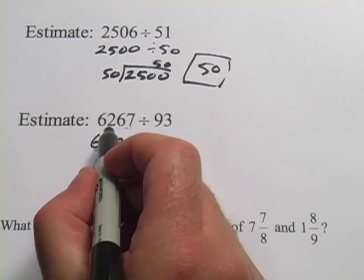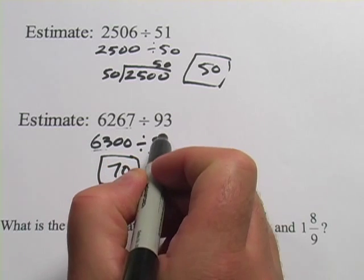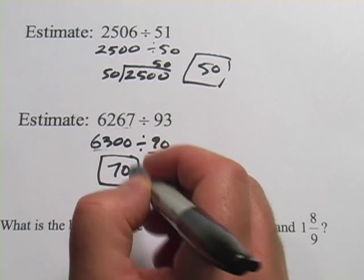That's not the right answer for 6,267 divided by 93, but it's the right answer when we're just estimating.